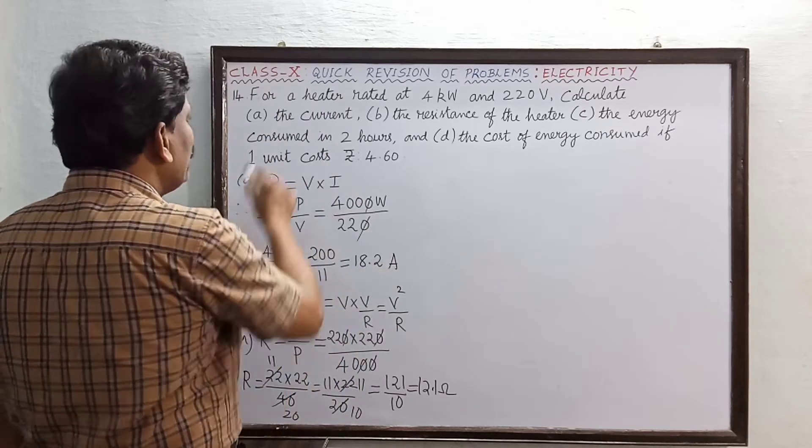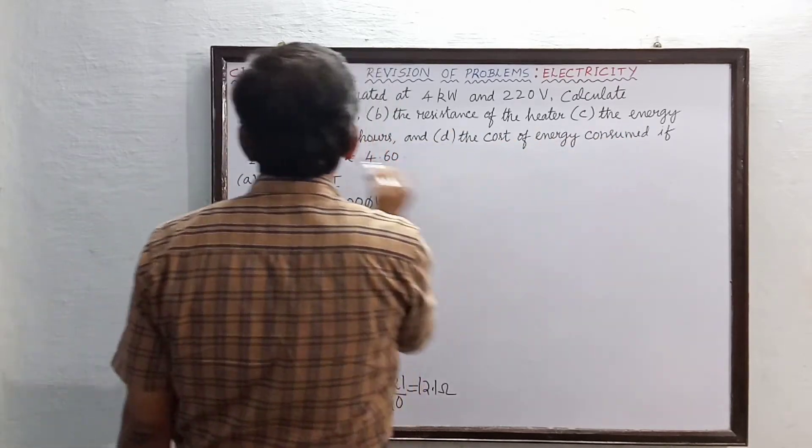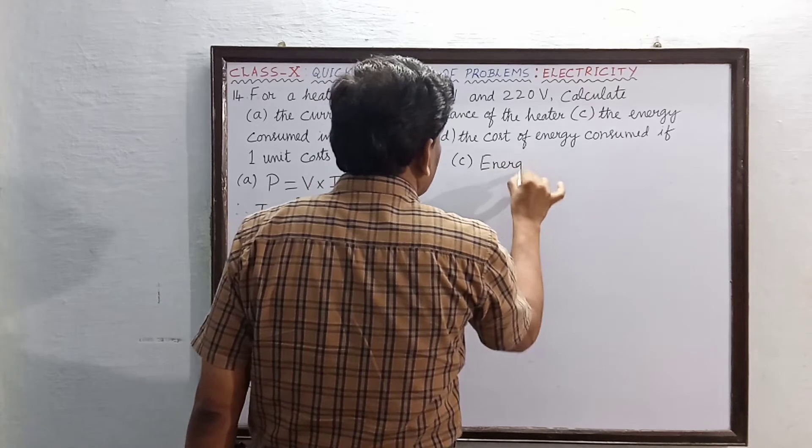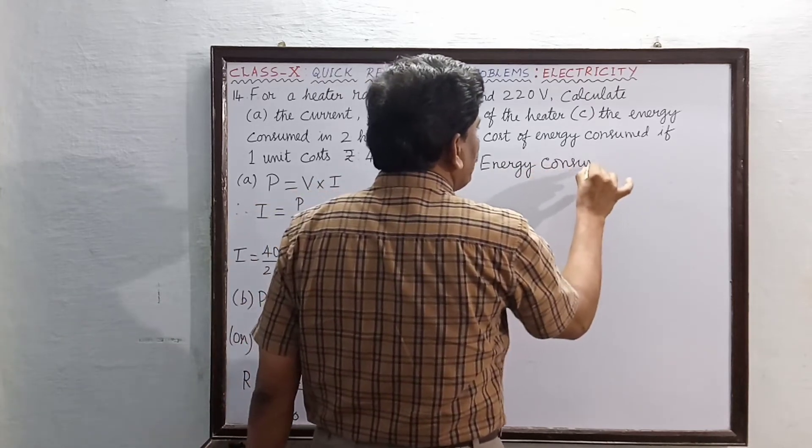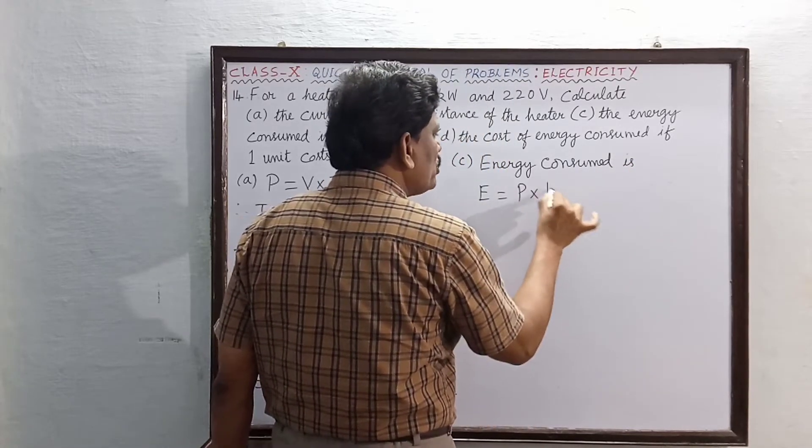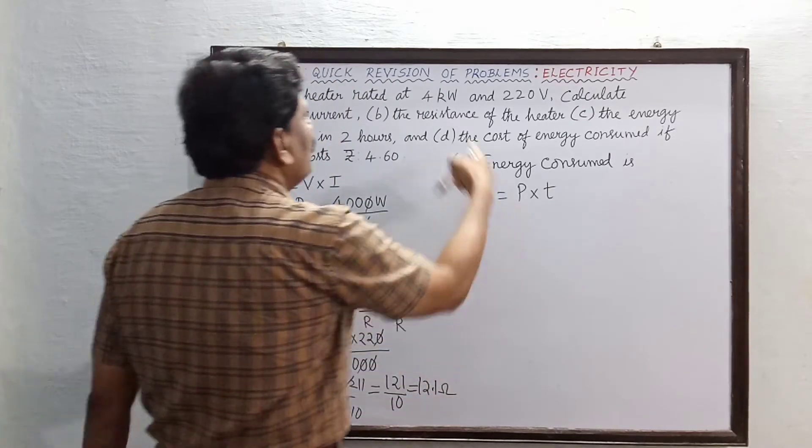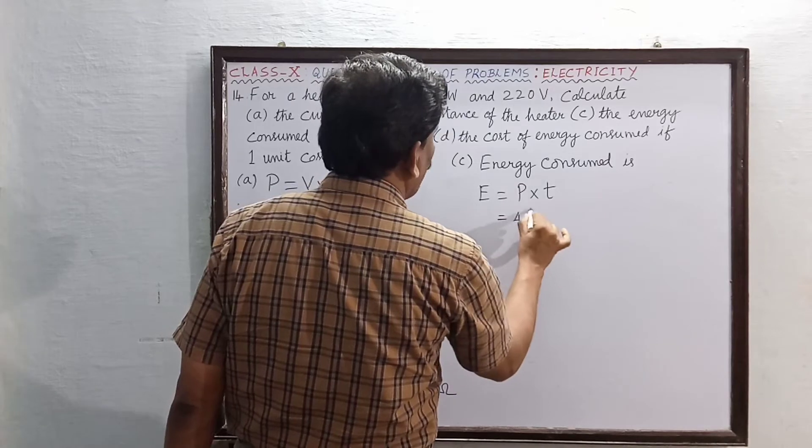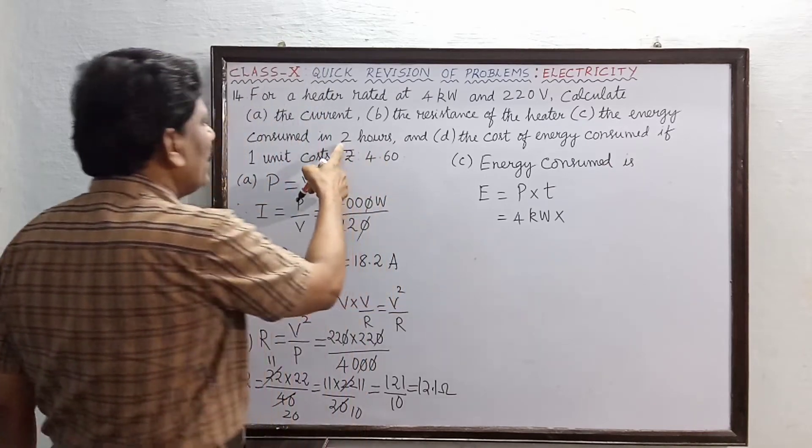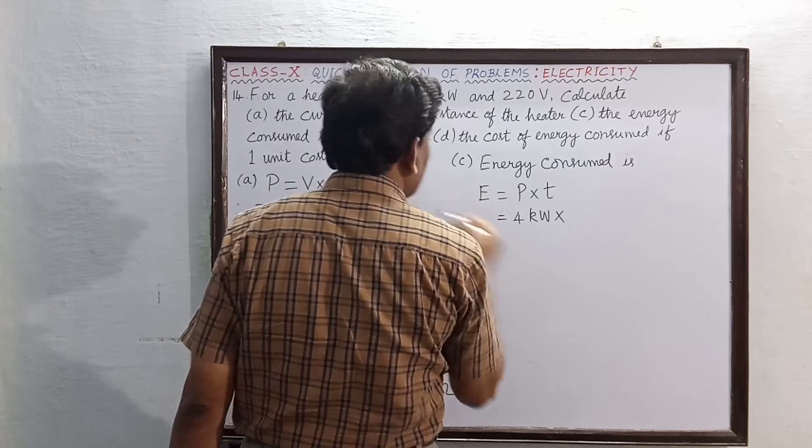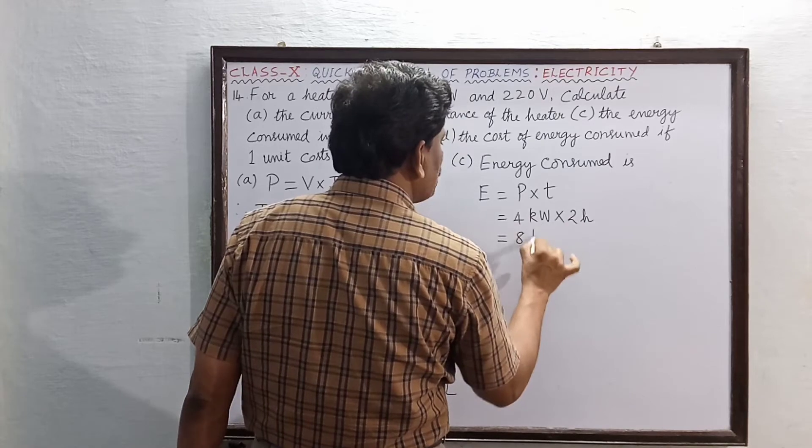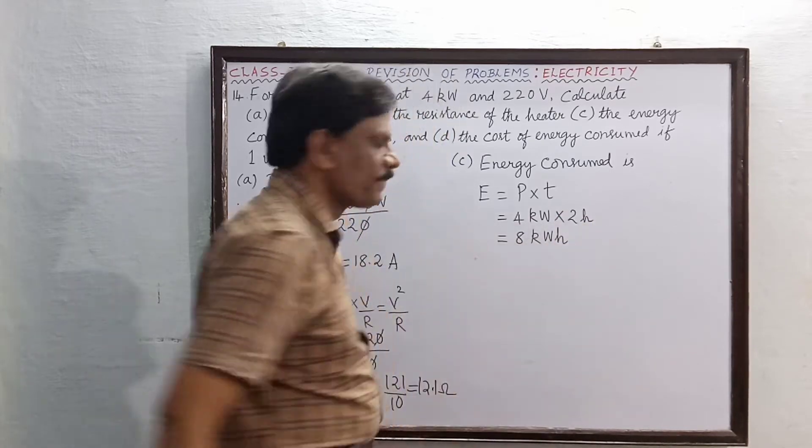Now we come to the third subdivision. The energy consumed in two hours. Subdivision C is the energy consumed. Energy consumed E is equal to power P into time. What is the power? It is 4 kilowatt. This is equal to 4 kilowatt multiplied by 2 hours. This is equal to 4 into 2 is 8. 8 kilowatt hour.